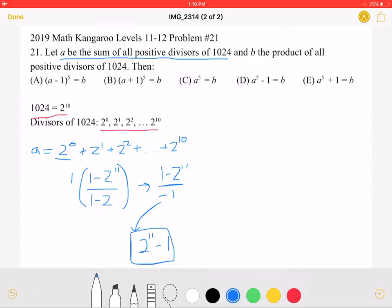Now let's see what B is. B is the product of all positive divisors of 1024. So B would be equal to 2 to the 0 times 2 to the 1st times 2 to the 2nd, and so on until we multiply 2 to the 10th.